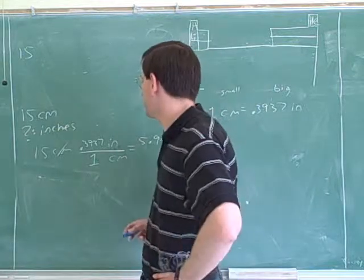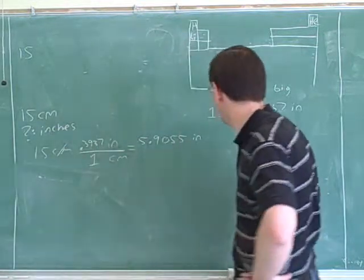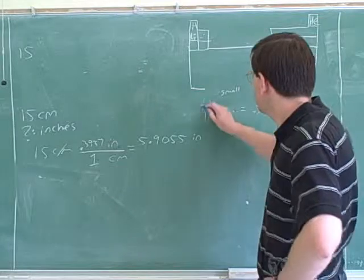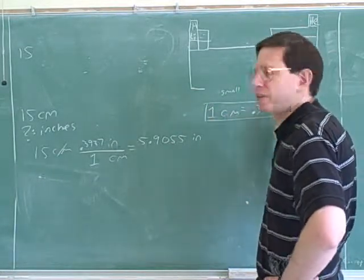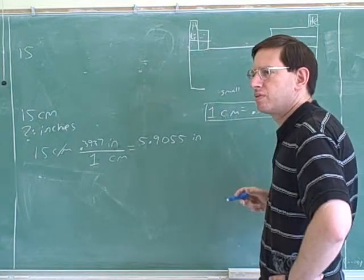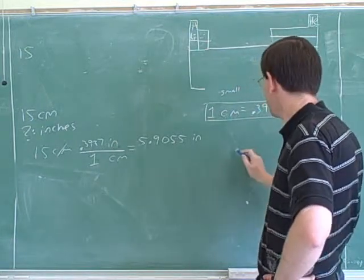All right, so you can see the big mistake to watch out for is putting the number in the wrong place. You really want to take your time with that. So you used this equivalency from the book. There was another equivalency in the book between centimeters and inches. Let's... yeah, what's that other equivalency?